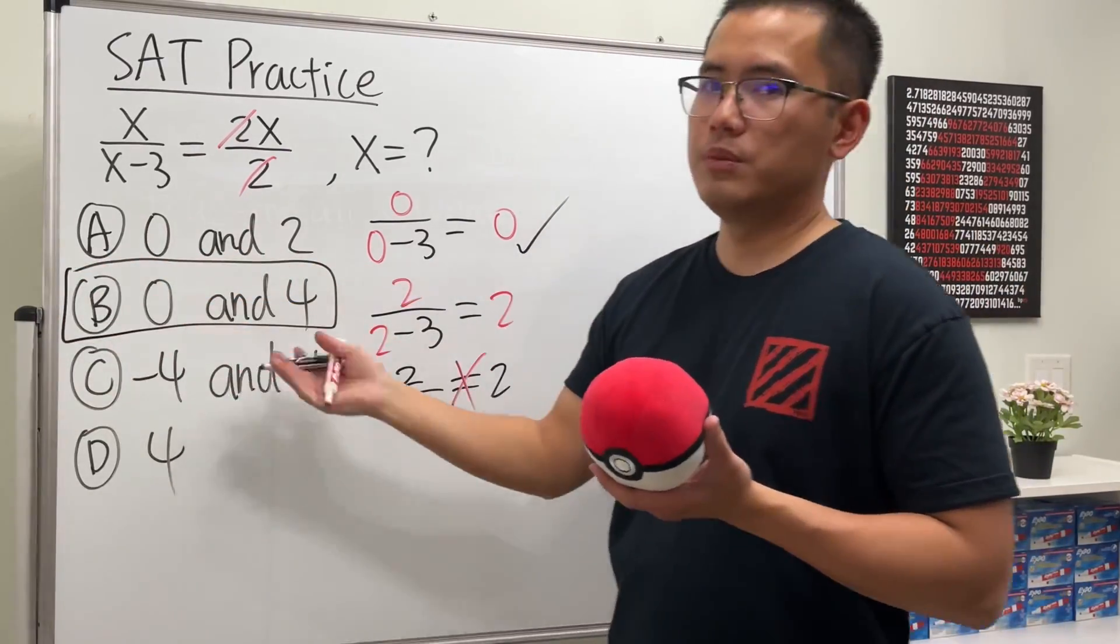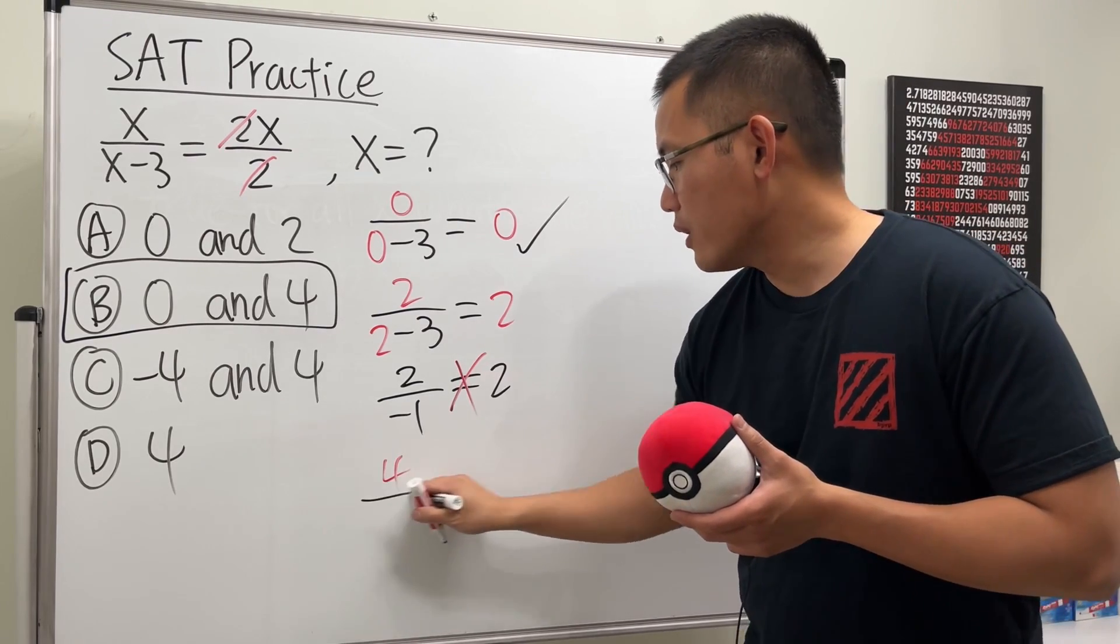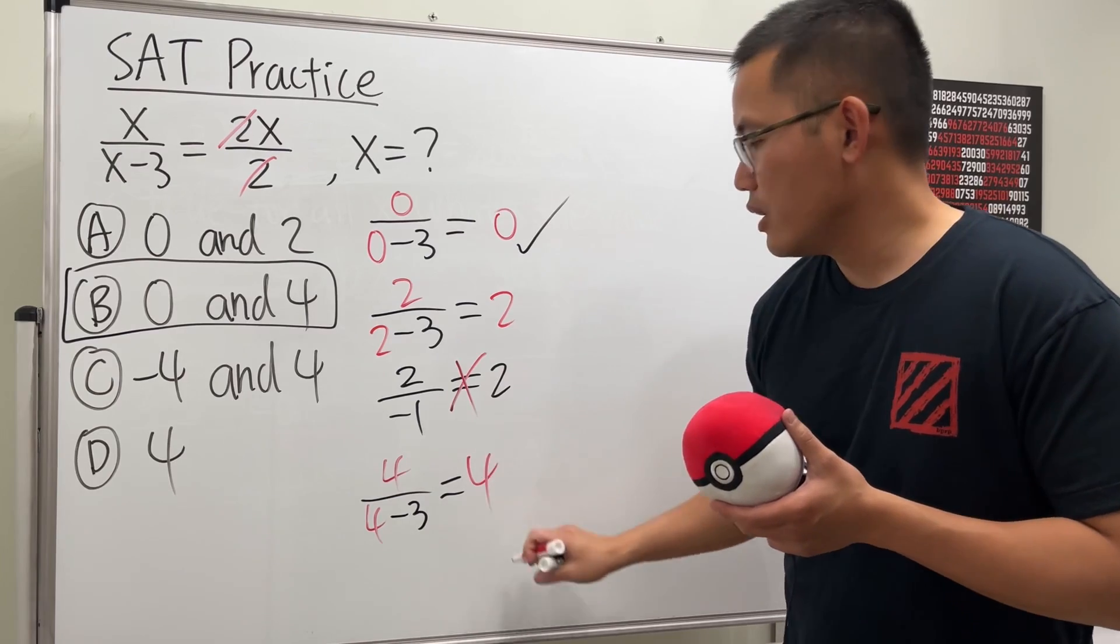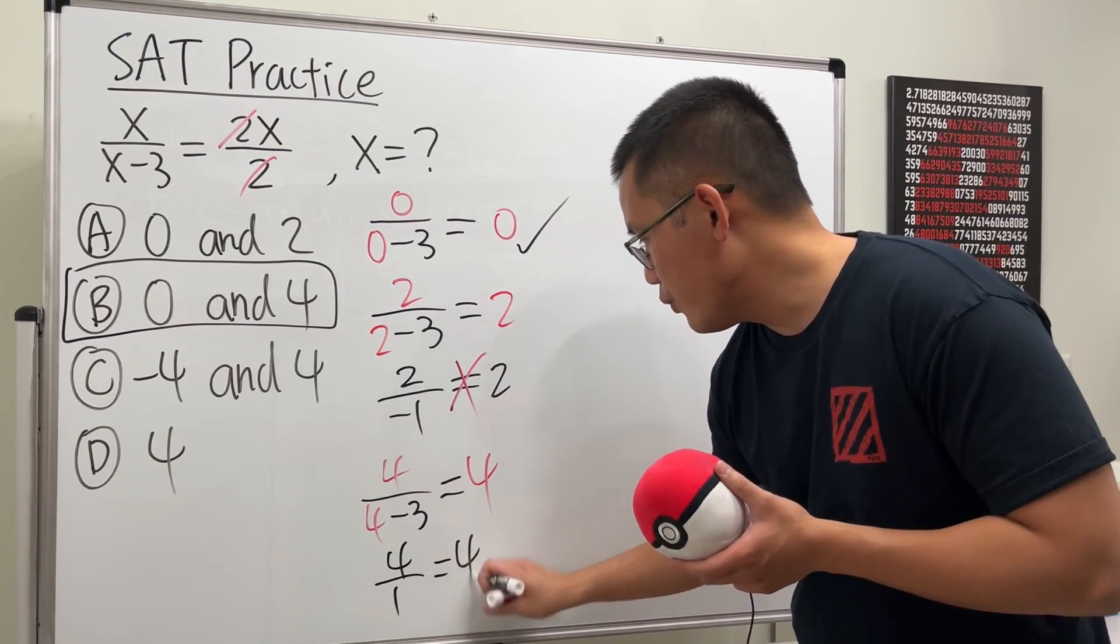Yeah it has to be, but anyway might as well just check. So four over four minus three, do we end up with four? You bet, because this is just four over one that is equal to four, so that works. So that is definitely correct.